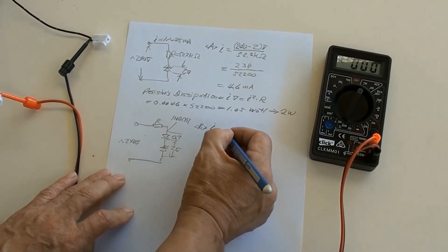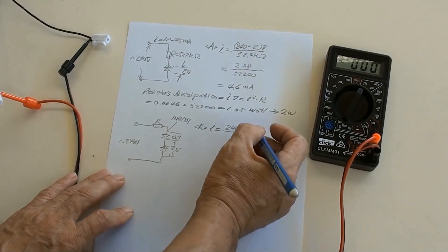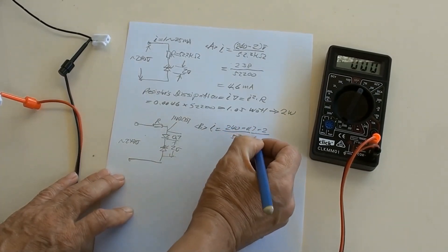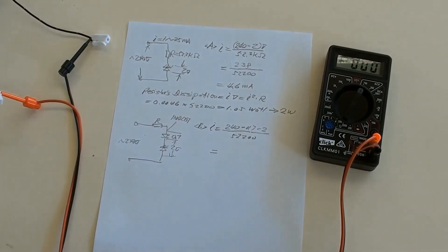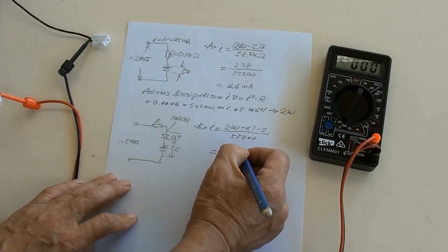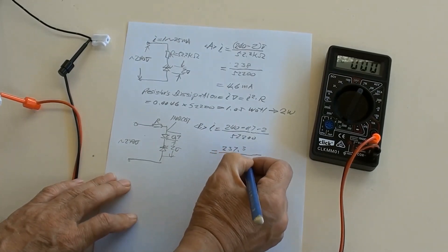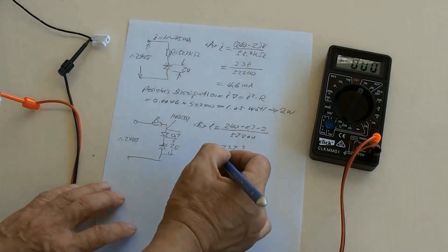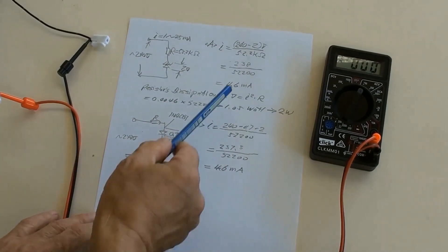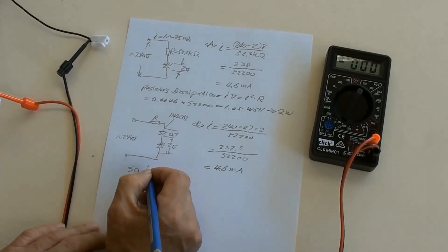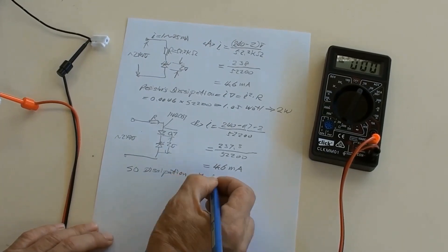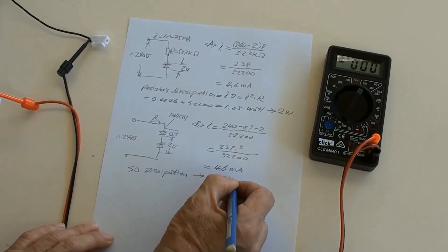This circuit's current equals (240V − 0.7V − 2V) / 52200Ω = 237.3 / 52200 = 4.6 milliamps. This result is the same as the previous circuit's current, so the resistor's dissipation is the same: 1.05 watts, and we choose 2 watts.